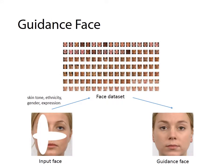Our approach estimates the skin tone, ethnicity, gender, and expression from the available region of an occluded face. Based on the estimation, it automatically retrieves a guidance face from a face dataset, which consists of over a thousand face images organized into different clusters. Here, the nose is transferred from the guidance face to repair the nose of the input face, which is completely missing.